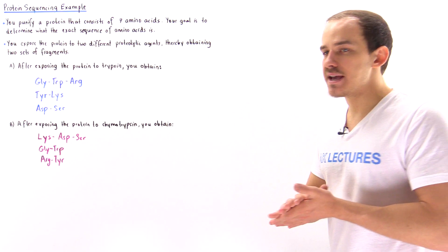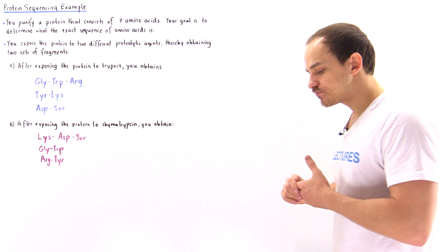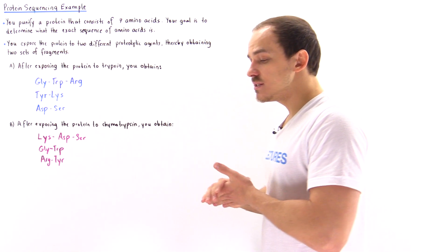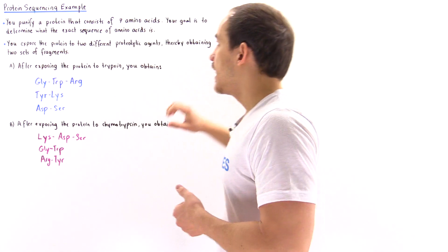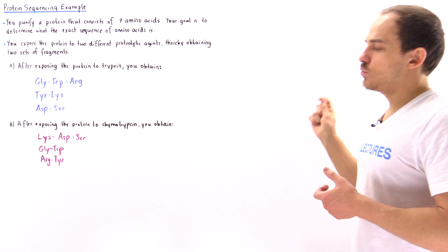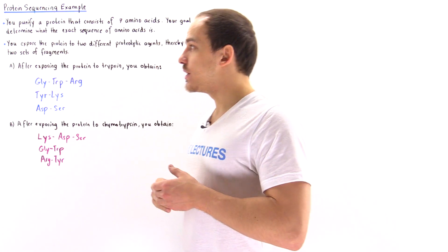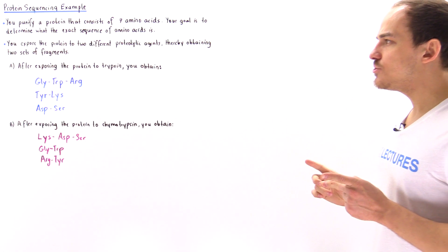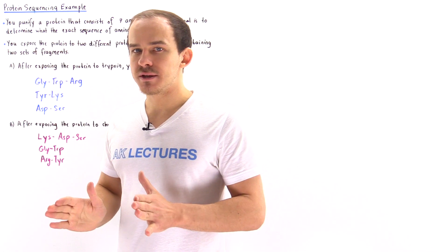To see another example, suppose you purify a protein consisting of seven amino acids. Your goal is to find the exact sequence of amino acids in that protein. You expose the protein to two different proteolytic agents, thereby producing two sets of different fragments.